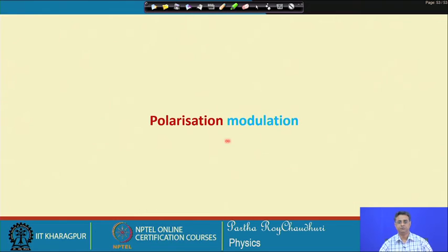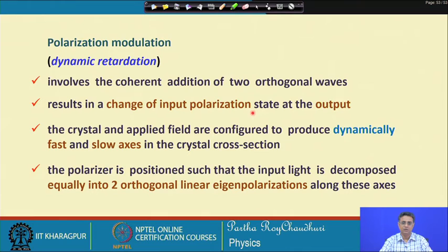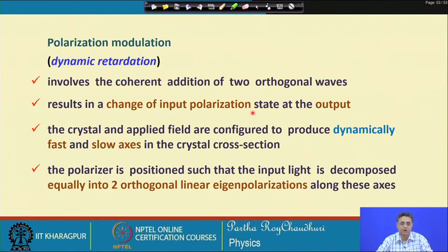Polarization modulation requires a dynamic retardation and involves the coherent addition of two orthogonal waves. In polarization modulation there is no change in intensity or direction of polarization — the polarization axis remains the same — but the state of polarization changes at the output, varying from linear to elliptical to circular polarization and back.